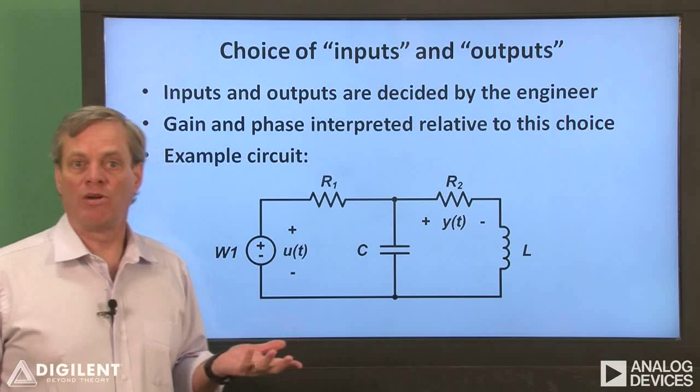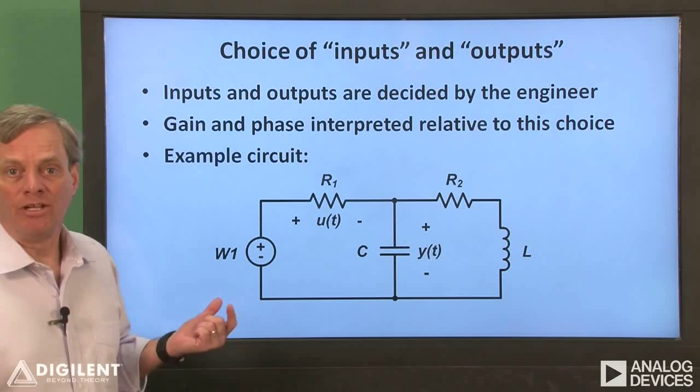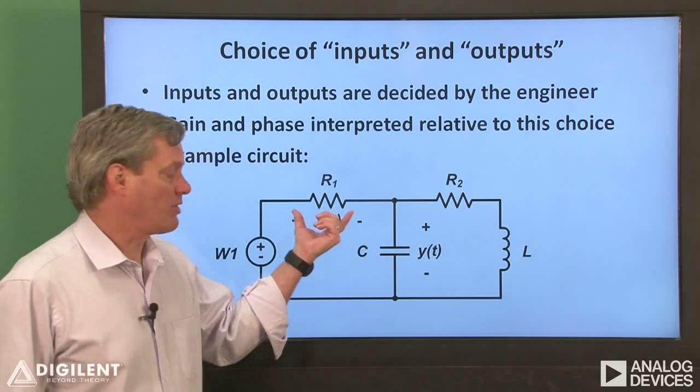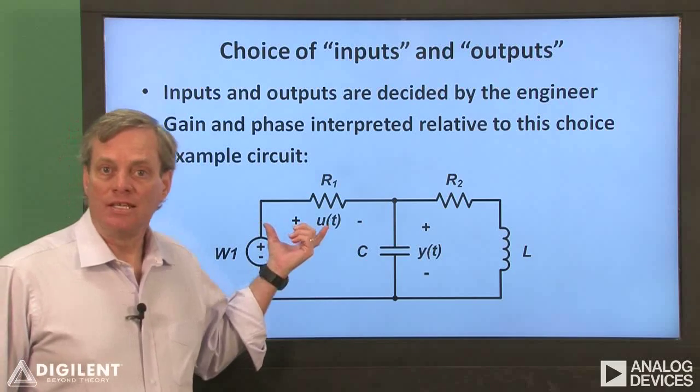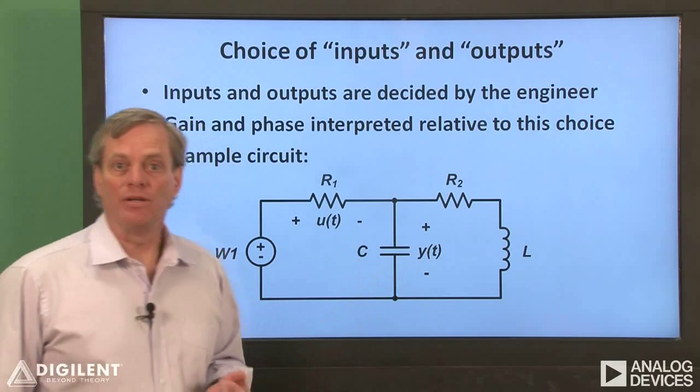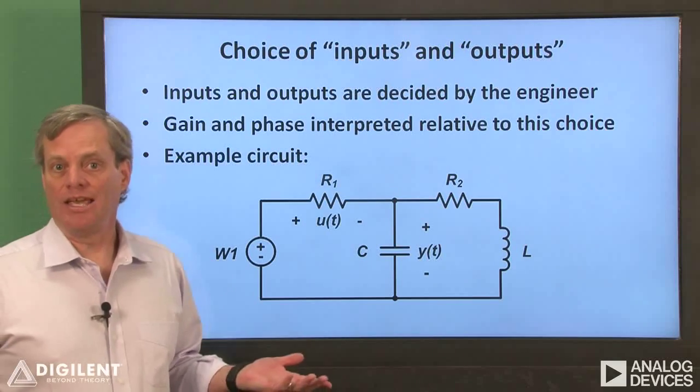If we were, for example, interested in the relationship between the voltage across the resistor R1 and the voltage across the capacitor, we could easily define one of these as the input and the other as the output. Which is defined as which simply tells us how to interpret the resulting gain and phase.